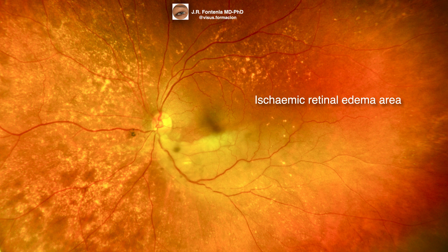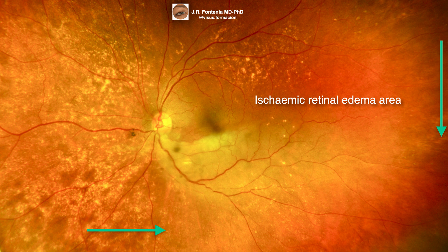In this white field retinography, we can see the area where the greatest amount of ischemic retinal edema is concentrated. Inferior and temporal to this area, we will also find acute parenchymal ischemia, although the retina is not so edematous. The layers of the retina where edema accumulates are thinner the farther we are from the posterior pole — being thinner, they retain less fluid and show less edema — but the entire inferior temporal quadrant will be functionally affected.